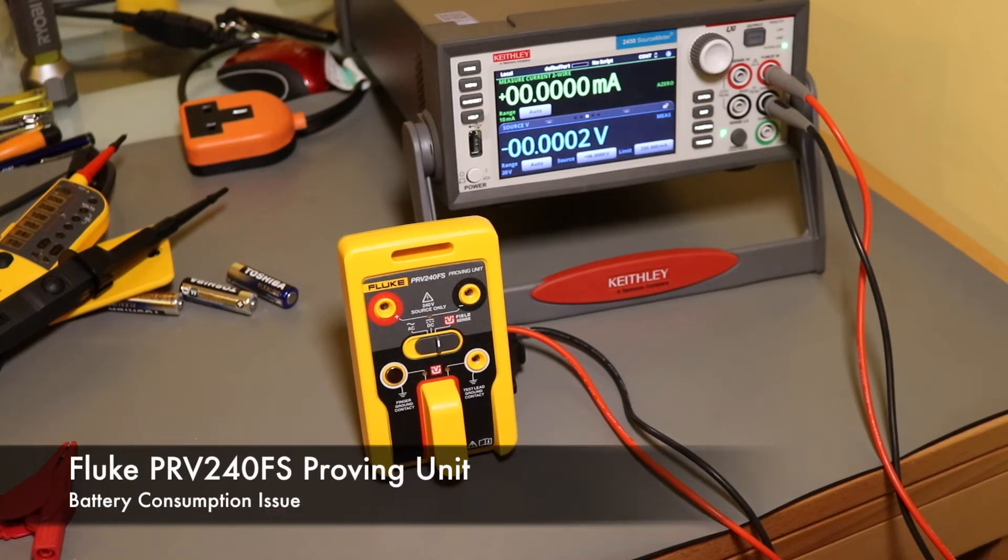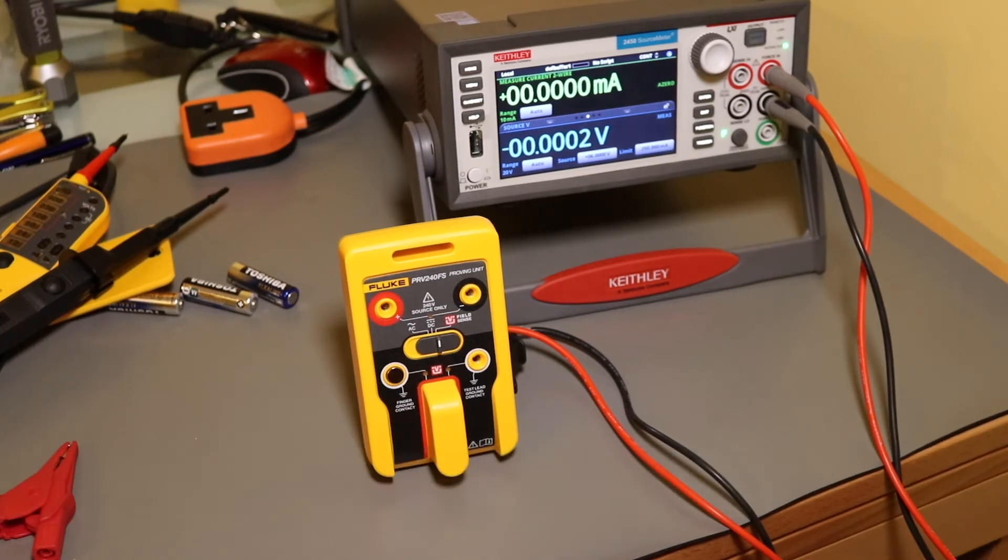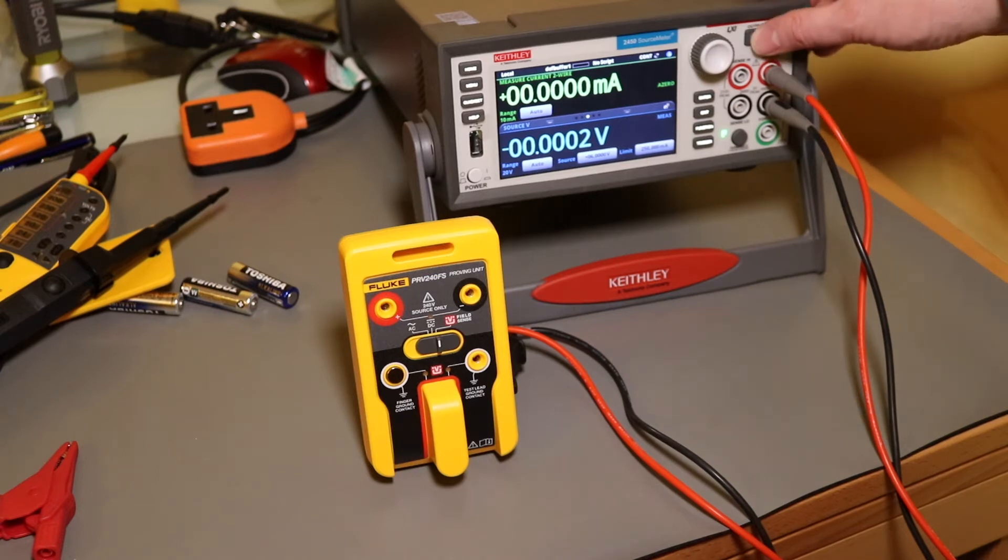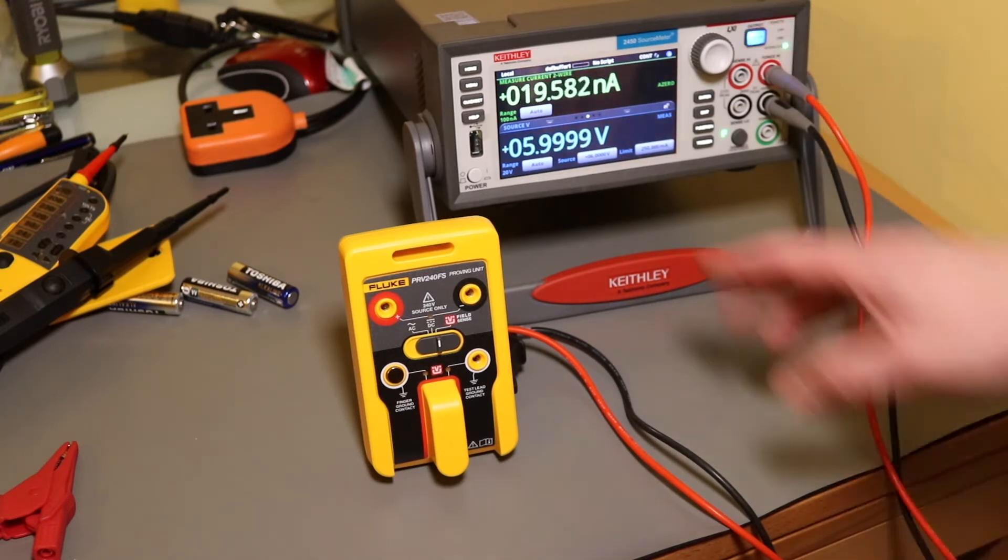So this is a Fluke PLV240FS that I've hooked up to a power supply to see what current is drawn, because the battery has only lasted around about 6 weeks which is very poor really. The power supply has been set up to 6V.